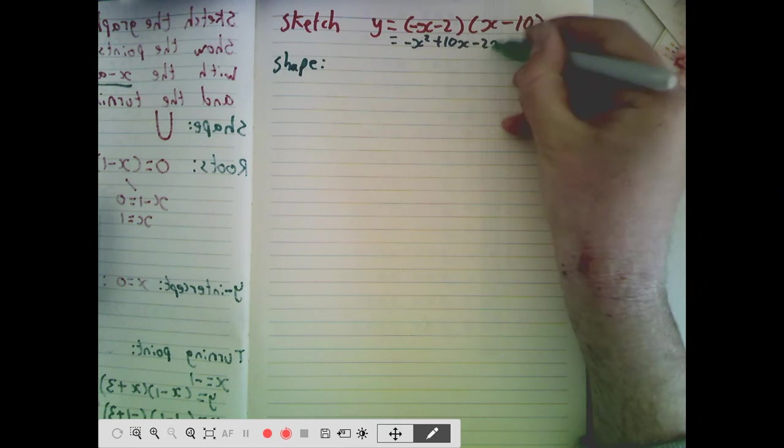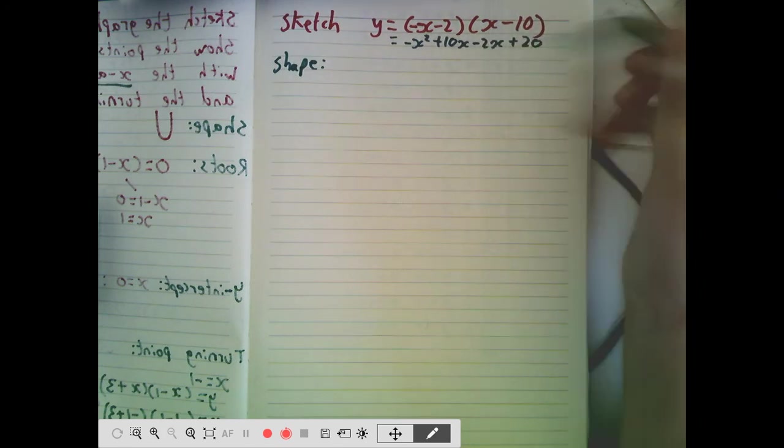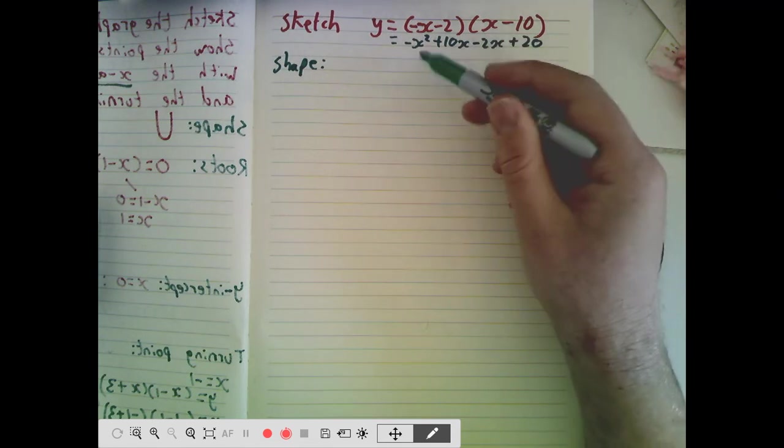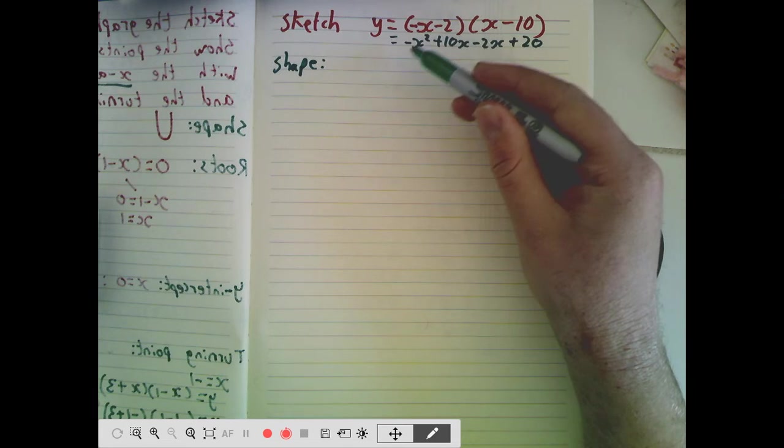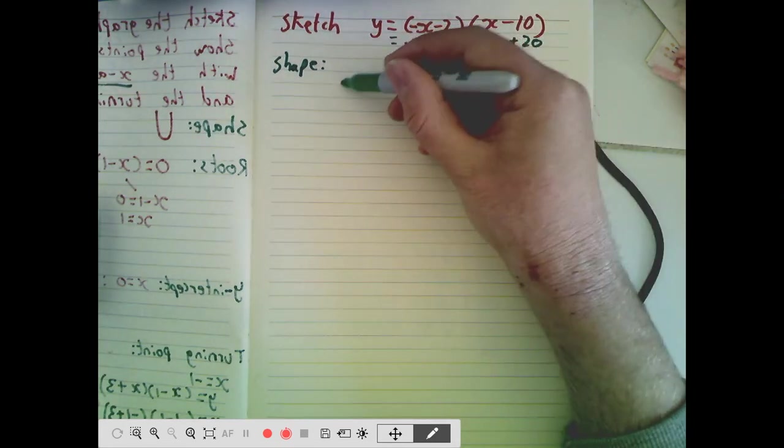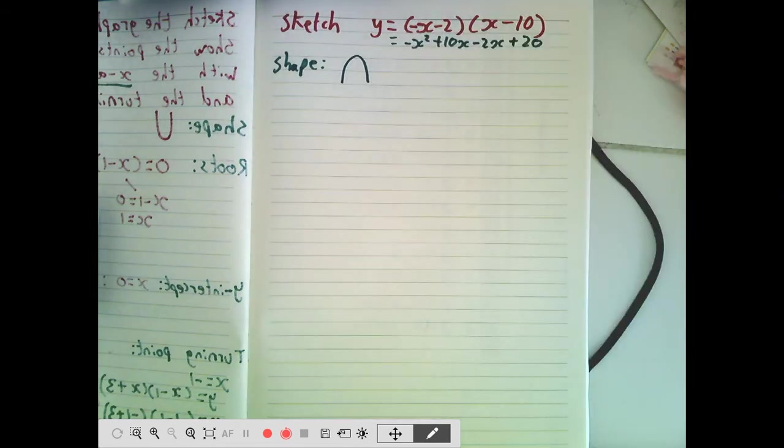And again, we could clean up from there, simplify that. But at this stage, it's very clear that the coefficient of x squared, the number in front of x squared, is a negative. And so the shape is going to be the N-shape. Okay, that's the first thing.